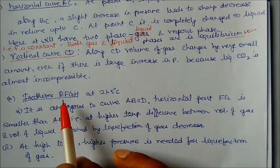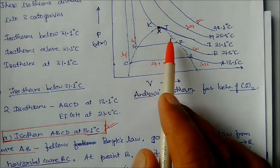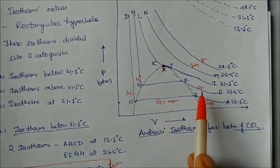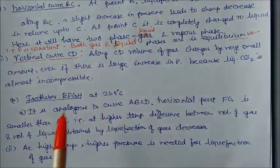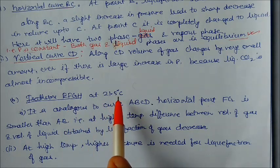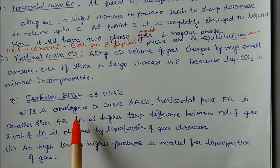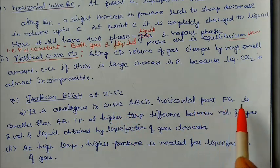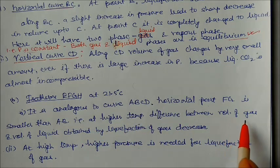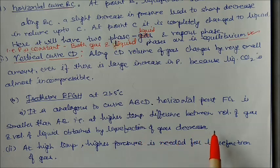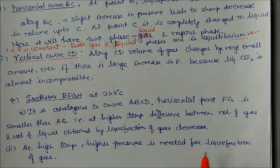The second isotherm EFGH at 21.5°C is analogous to curve ABCD. However, the horizontal part FG is smaller than BC, because at higher temperature the difference between the volume of the gas and the volume of liquid obtained by liquefaction decreases. Also, a higher pressure is needed for liquefaction of gases at higher temperatures.